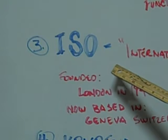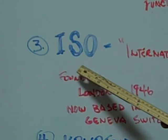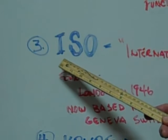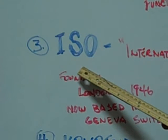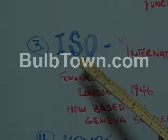It was founded in London in 1946, but is now based in Geneva, Switzerland. They share knowledge, quality standards, safety, and efficiency for incandescent and all the lamps that are used. So that when you go anywhere in the world, you will get the same standards in all the lamps that you would buy worldwide because of ISO.